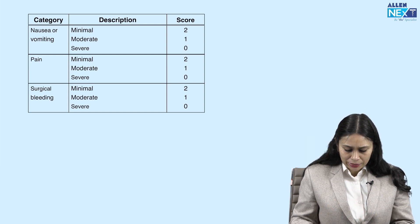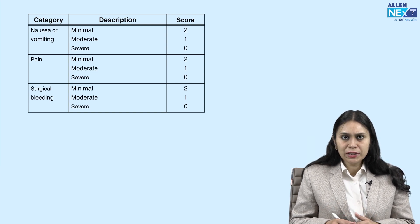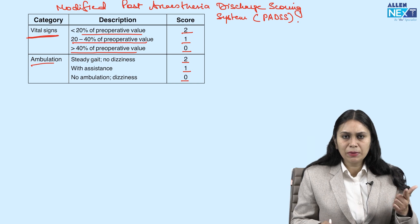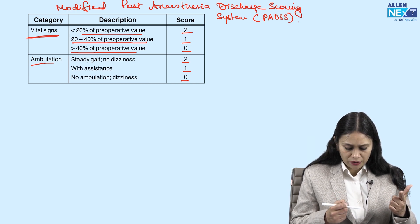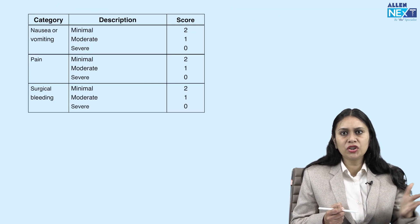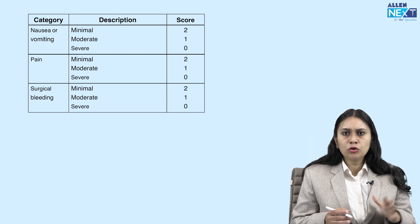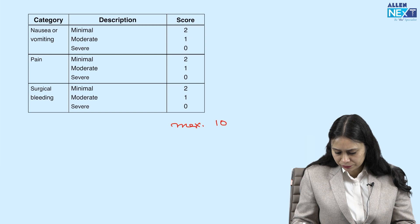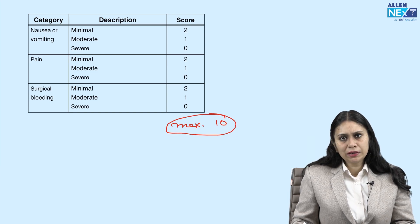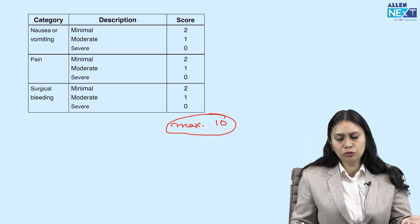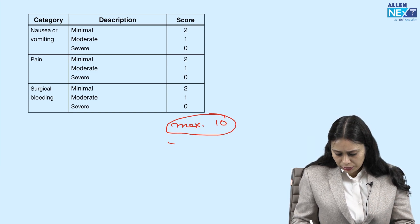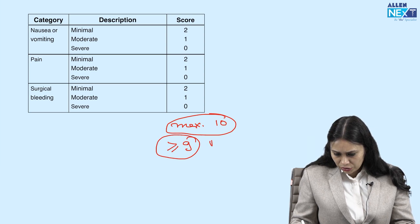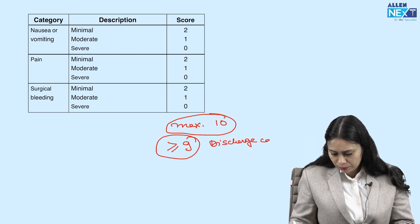So again, in the Modified PADS, we have five criteria: vital signs, ambulation, nausea and vomiting, pain, and surgical bleeding. The maximum score is again 10. And here also, the patient can be discharged home only if the score is more than 9. So a score greater than 9 means discharge is possible.